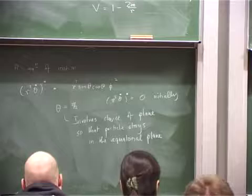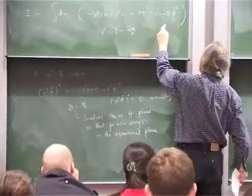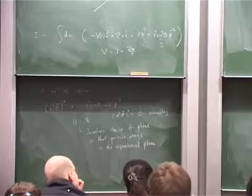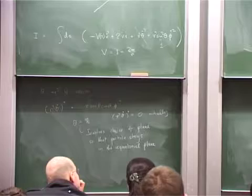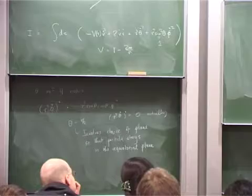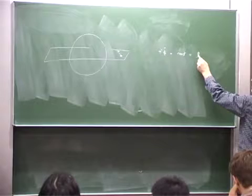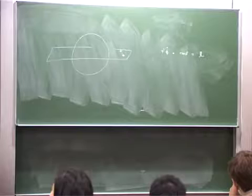Assuming we have done that, we can forget the theta term and put theta equal to pi/2, which sets sine theta equal to 1. Then we compute the equations of motion. First, phi is an ignorable coordinate because there's a phi-dot in the action but no phi, so we immediately conclude that r squared phi-dot is a constant. It is conventional to call that constant L, since r squared phi-dot is basically the angular momentum per unit mass.